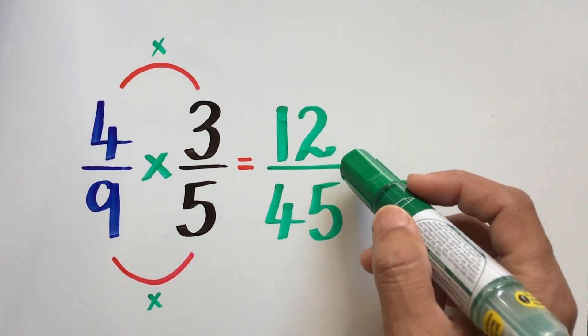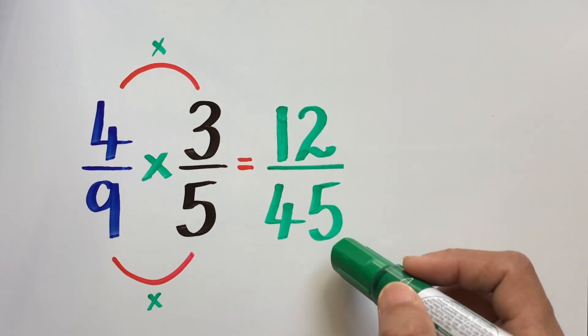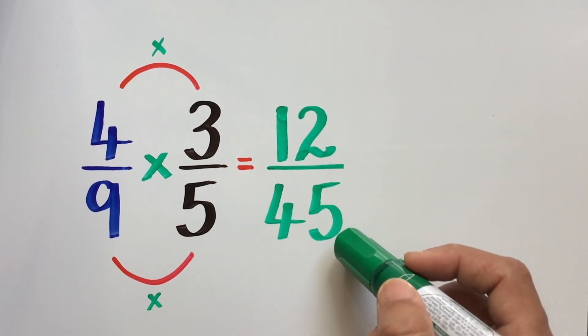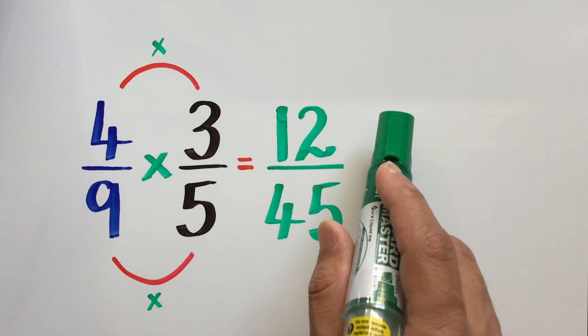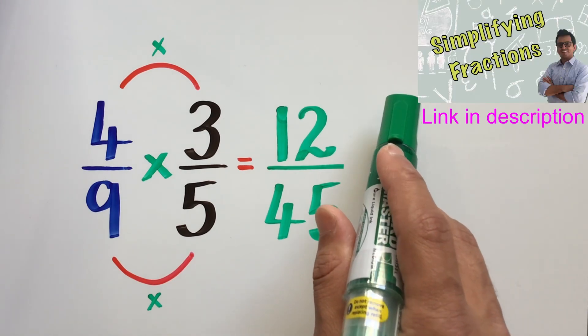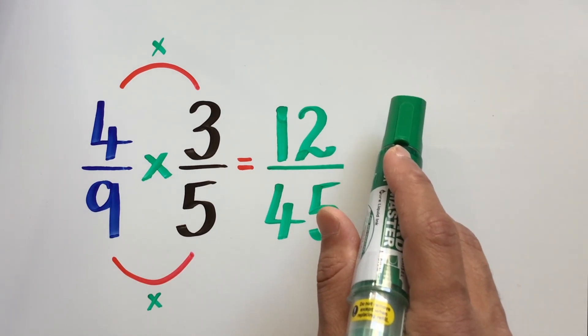Now if you notice, the fraction 12 over 45 is not in its simplified form, and we need to simplify this fraction to its lowest terms. I would encourage you to watch my video on simplifying fractions to learn more about it.